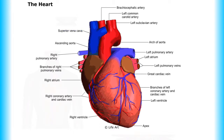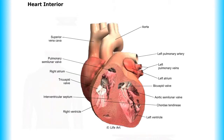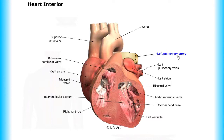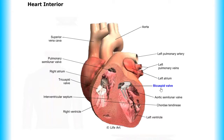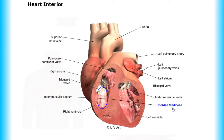Let's highlight parts of the heart's interior. Aorta, left pulmonary artery, left pulmonary veins, left atrium, bicuspid valve, aortic semilunar valve, cordae tendiniae, left ventricle, right ventricle.